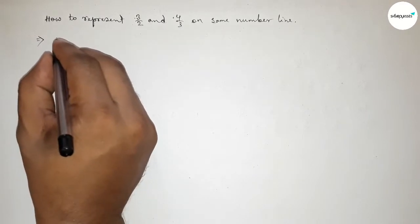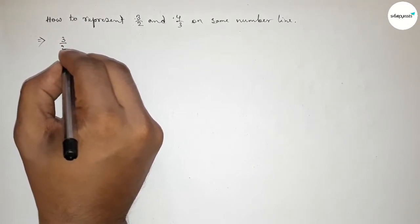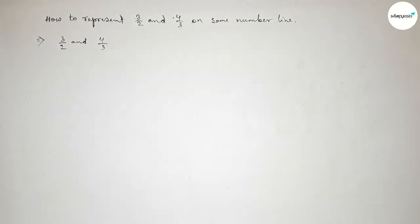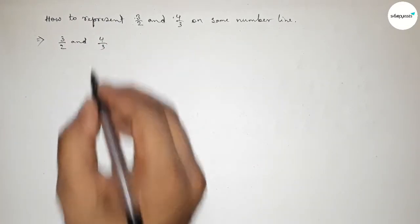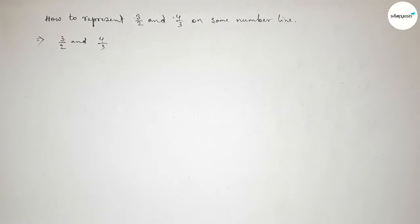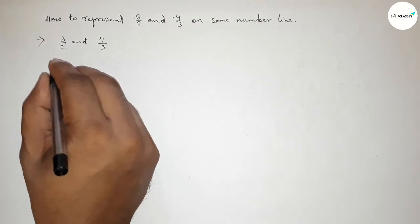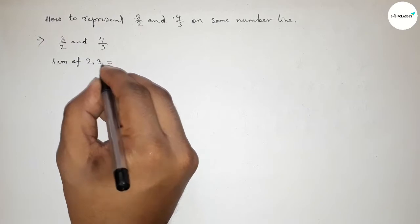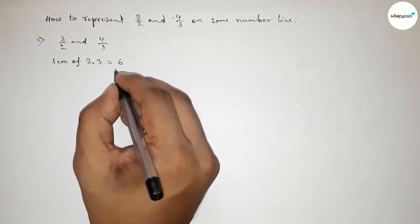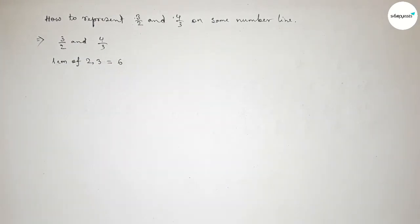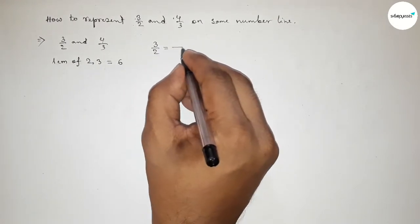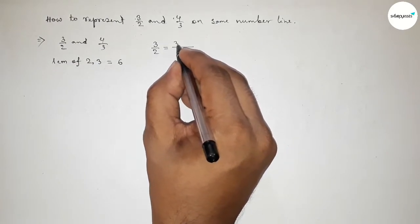First of all, we are given two numbers: 3 over 2 and 4 over 3. The denominators of both fractions are not the same, so we have to make the denominators the same. Now finding the LCM between 2 and 3 — the LCM is obviously 6.